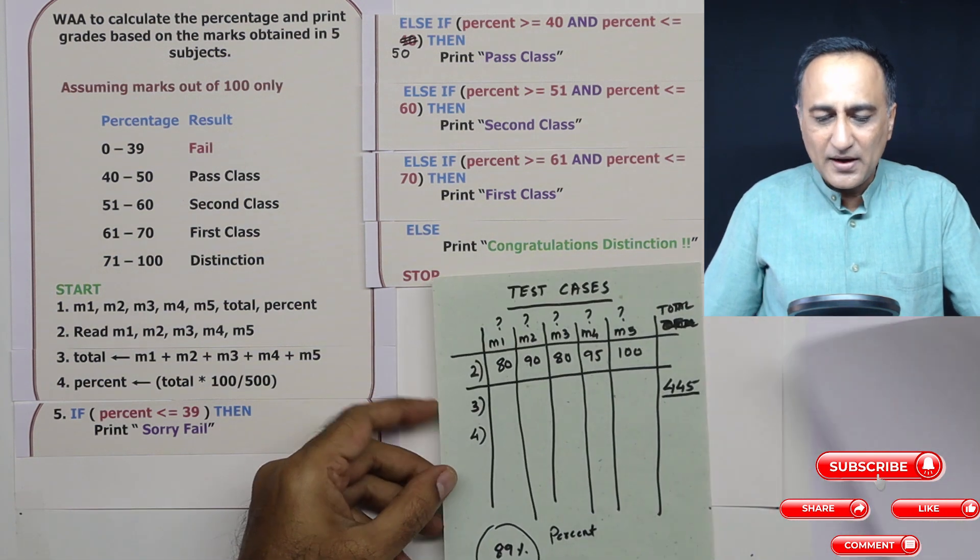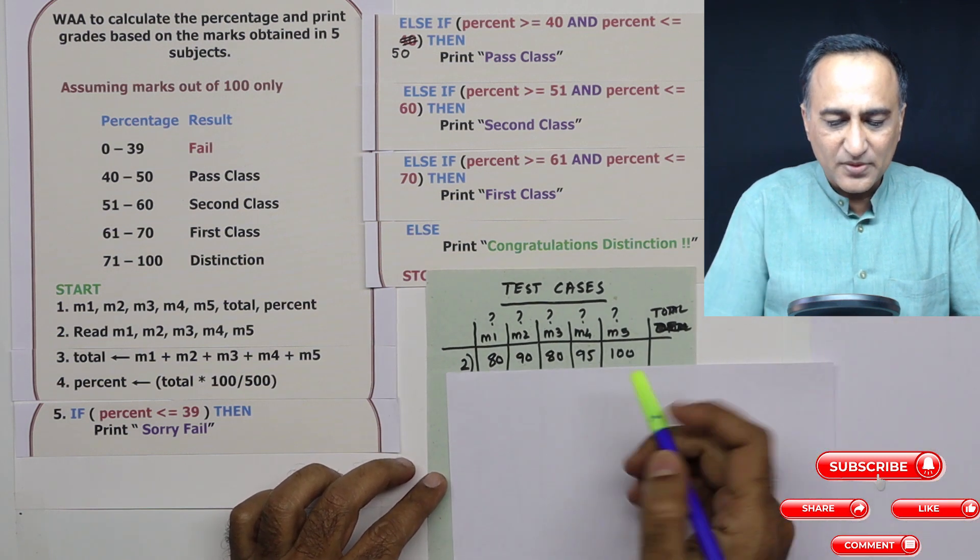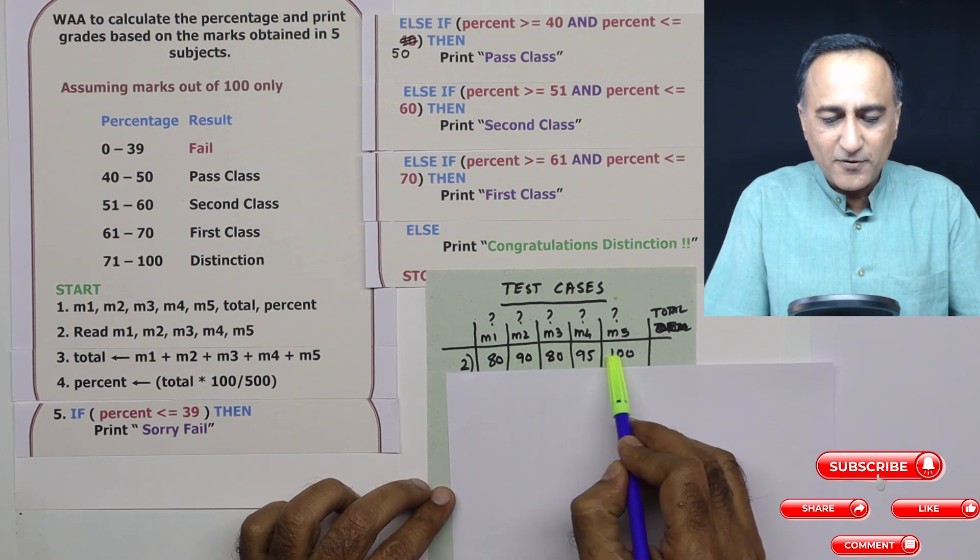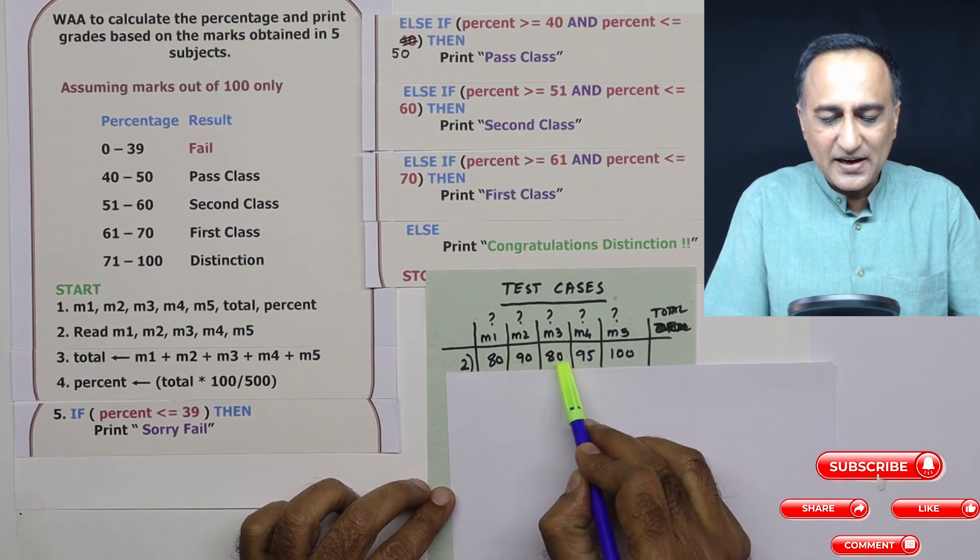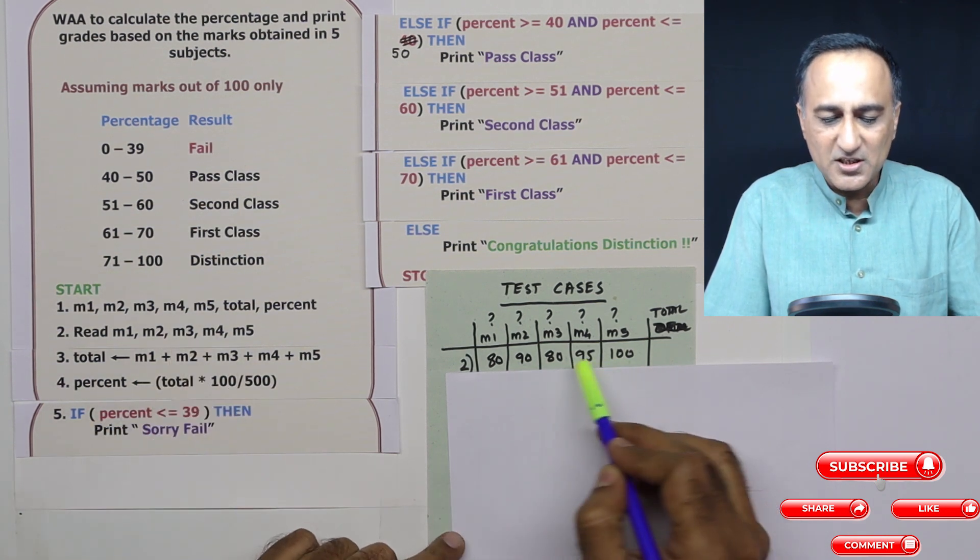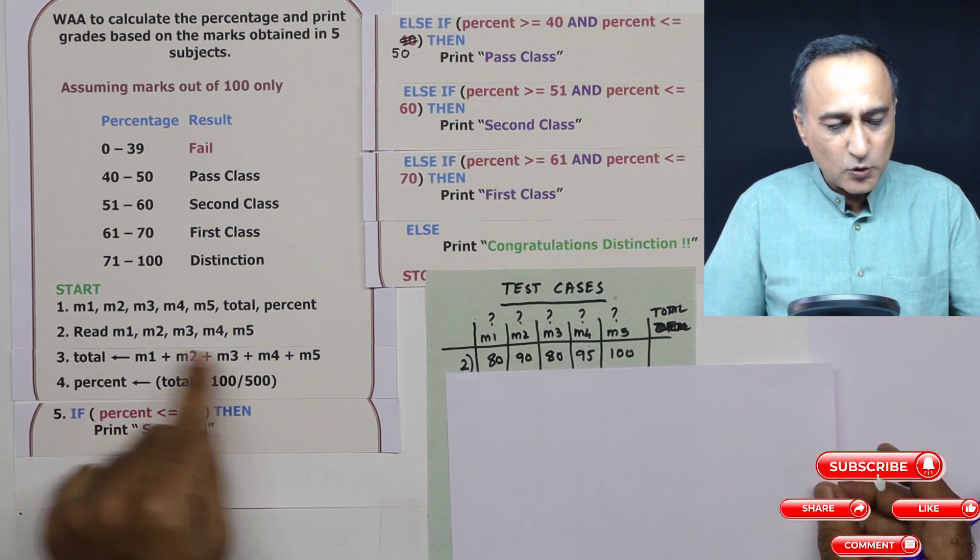Now, simple way as usual, let's evaluate doing a test run. So what I have done is I have given the marks of five subjects here: 80, 90, 80, 95, 100. Most likely this is going to be a distinction candidate because of the kind of marks. So in step number two, I have read all these marks.